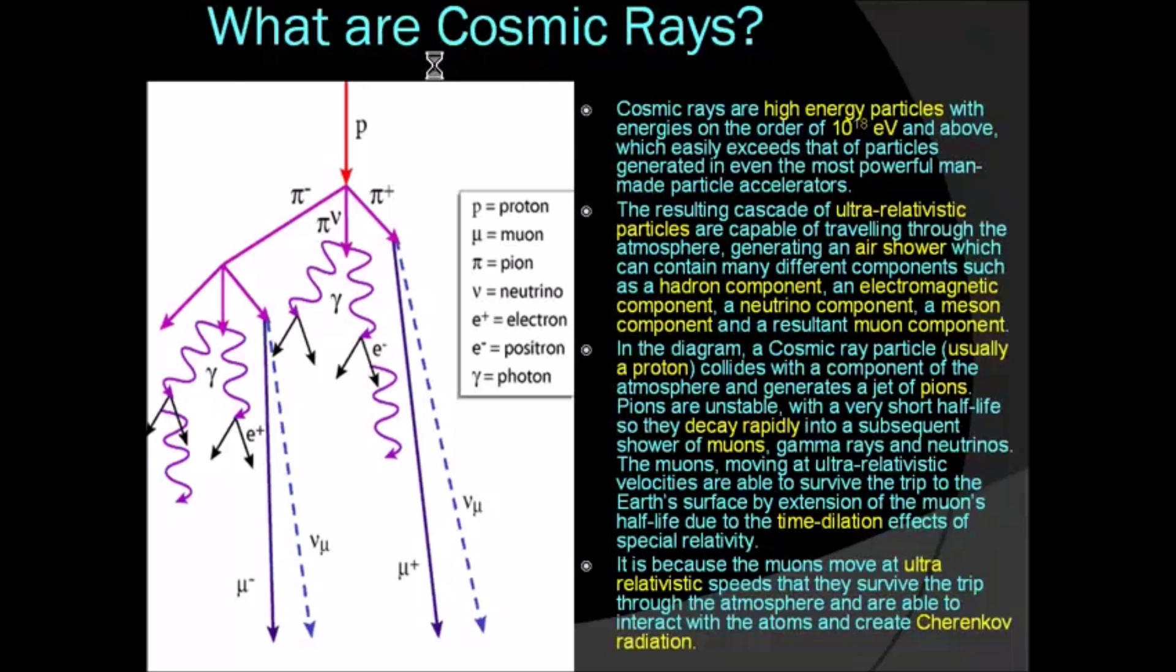Cosmic rays are mainly protons, though there have been cases where iron nuclei have been observed. When a proton collides with a particle in the atmosphere, it produces a cascade of other particles that are normally pions. Pions decay very quickly into a resulting cascade of muons, muon neutrinos, and gamma rays. Because these particles are moving at ultra-relativistic speeds, the muons are able to survive to the Earth's surface by time dilation.